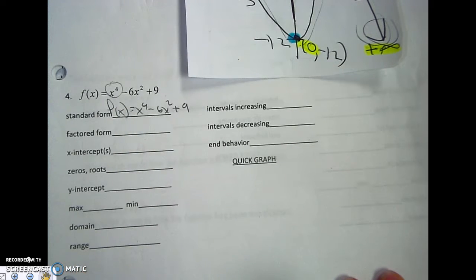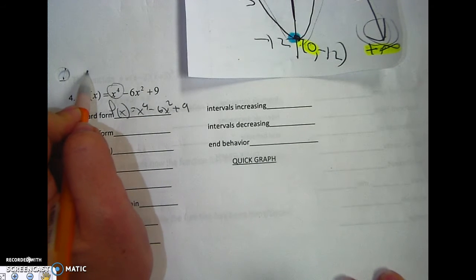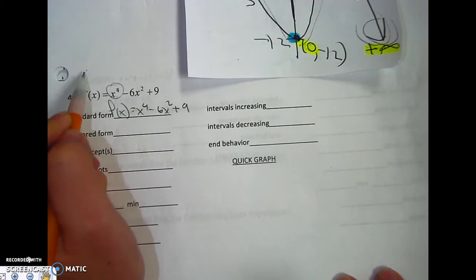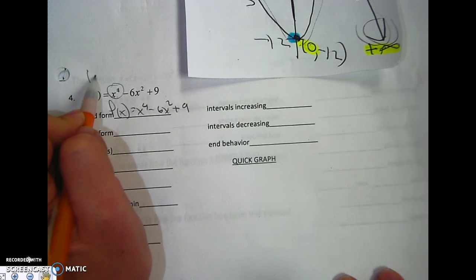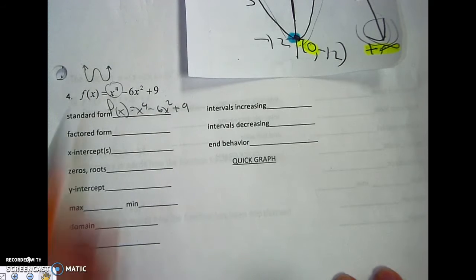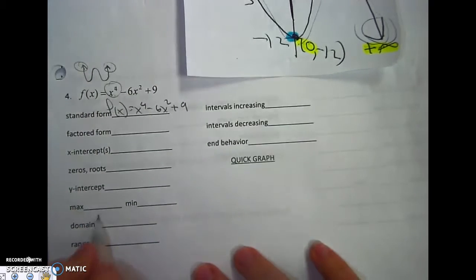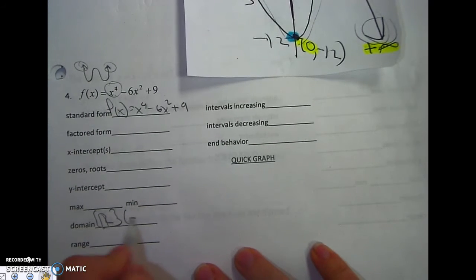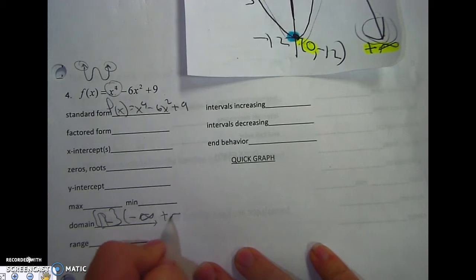I do know when something's to the fourth power, it's like x squared, which is a u, which means it goes 1, 2, 3, 4, which means that's going to be going up, which means the domain is all real numbers, negative infinity to positive infinity.